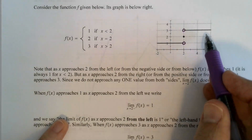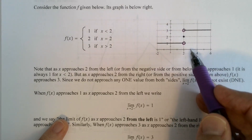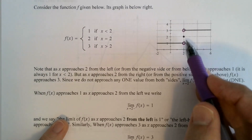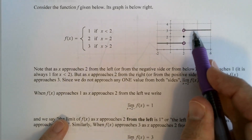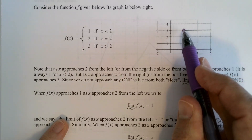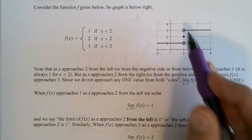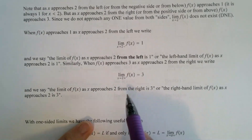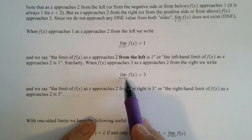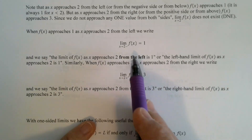As x approaches 2 from the right — plugging in values close to 2 like 3, 2.5, 2.1, 2.01 — I get 3 every time. I'm approaching 3. I ride along this curve getting closer and closer to this open circle. We say the limit as x approaches 2 with a plus sign after the 2 — the plus sign indicates the limit from the right. So we have a limit from the left and a limit from the right.